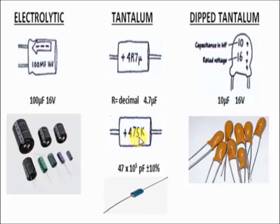For the lower example showing '475K': the first two digits are copied as-is, and the third digit becomes the exponent of base 10. So the result is 47 × 10³ microfarad. The 'K' is the tolerance — you look it up in the capacitor tolerance table to find that K is equivalent to plus or minus 10%.